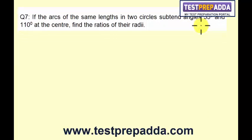Now the question says, if the arcs of the same length in two circles subtend angles 55 degrees and 110 degrees at the center, find the ratios of their radii.